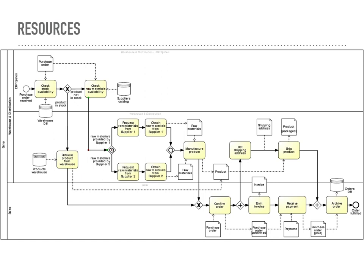In BPMN, pools and lanes are graphical elements used to organize and represent participants or organizational units involved in the business process. They provide a visual structure for modeling complex processes involving multiple stakeholders. Pools represent separate organizational entities or participants in a process. They can be thought of as a high-level container that encapsulates an entire process or sub-process within a larger process. Each pool typically corresponds to a specific organization, department, or external entity that participates in the process — for example, a sales department or supplier company.